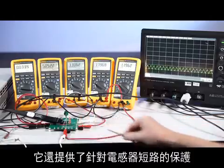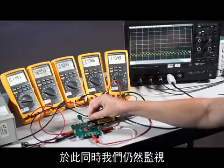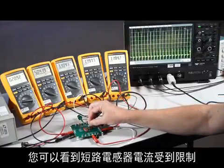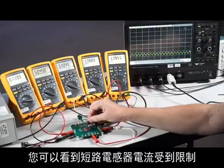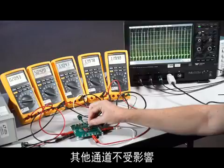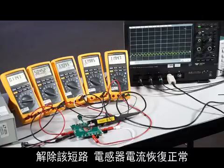It will also protect against inductor shorts. This jumper will short the inductor on channel 1 while we still monitor the output voltage and inductor current. You can see that the shorted inductor current is limited and the output remains in regulation. The other channels are unaffected. Remove the short and the inductor current returns to normal.